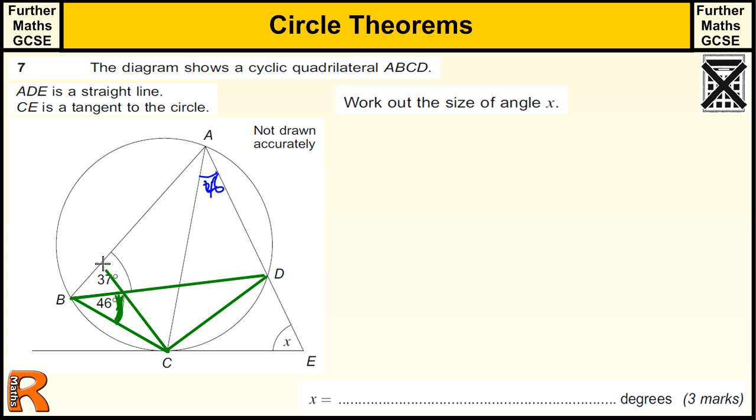So if I make another angle anywhere on the circumference of the circle, in fact this one here, then those two are the same. So that angle there is 46 because that angle is 46. Okay, that's one thing.